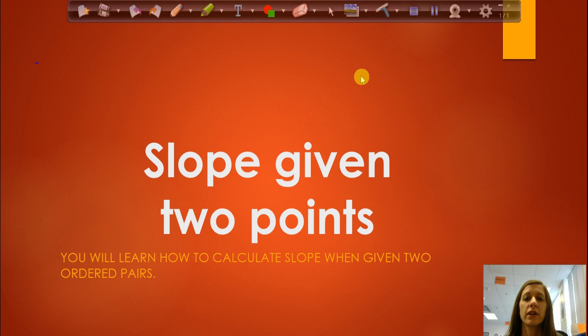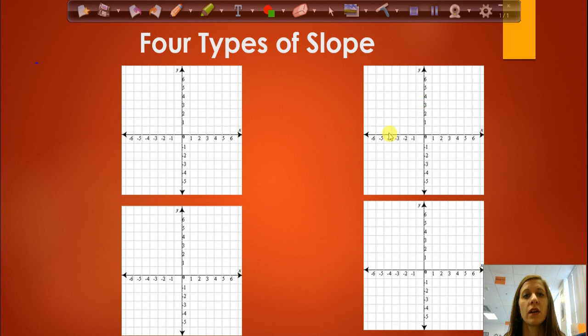For this lesson you are going to learn how to calculate slope given two points or two ordered pairs. So first let's talk about the four types of slopes that we've already discussed in class.